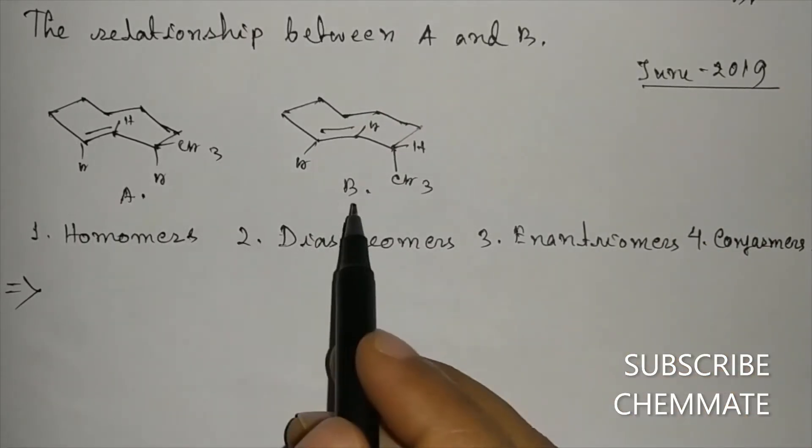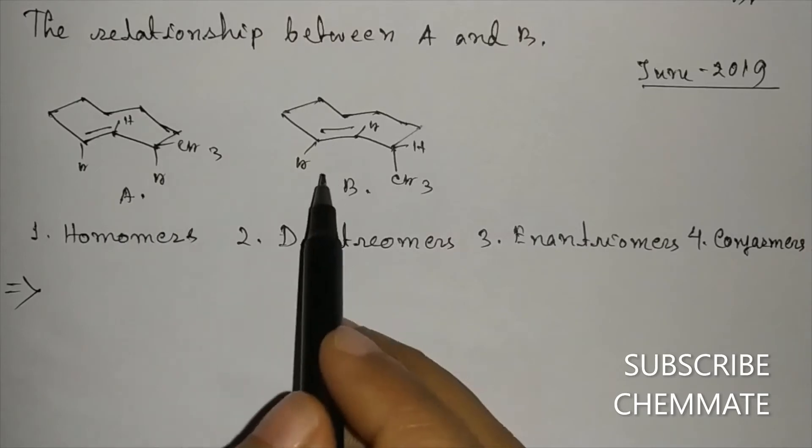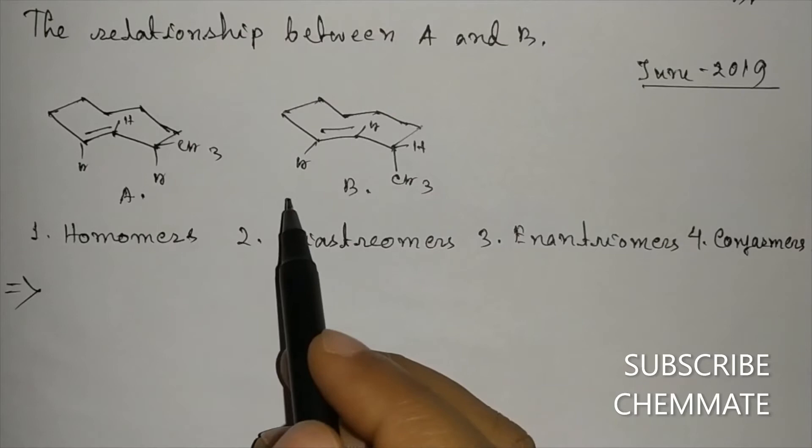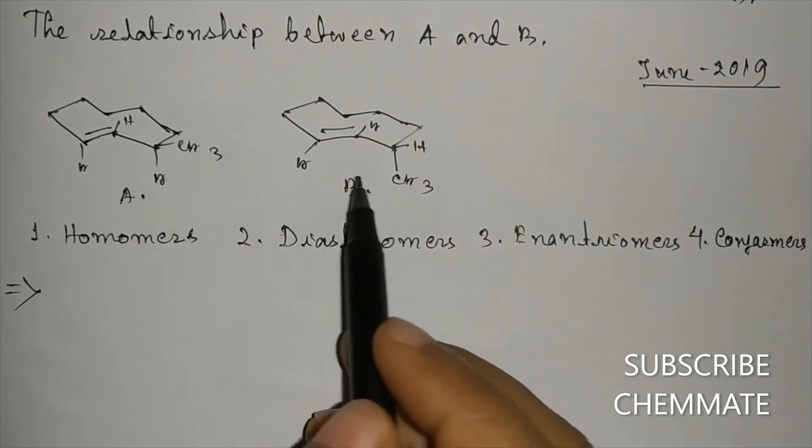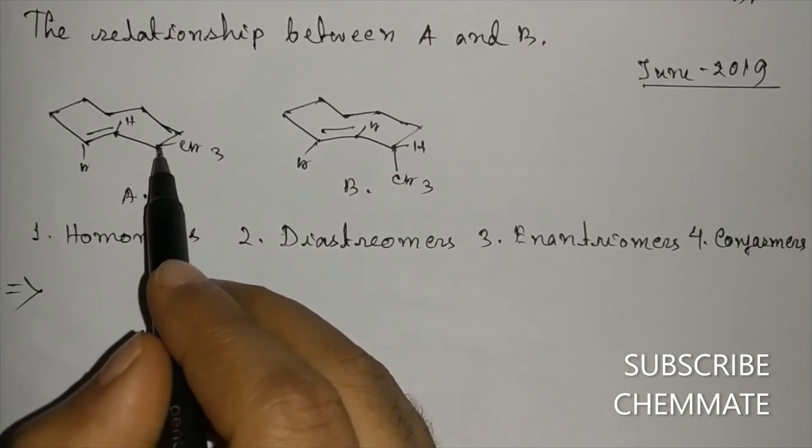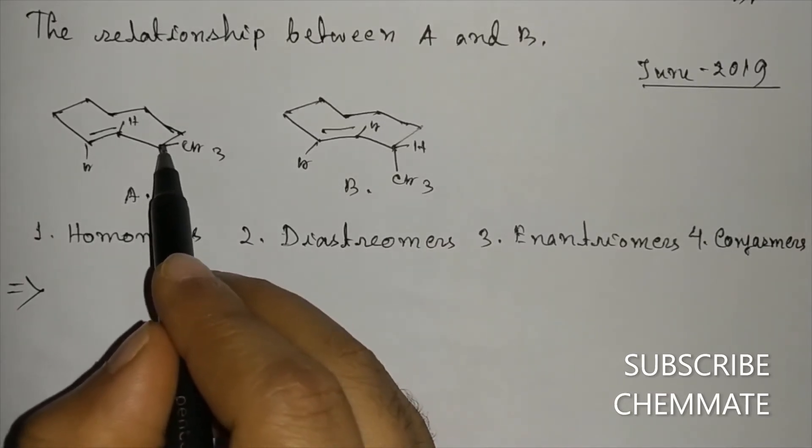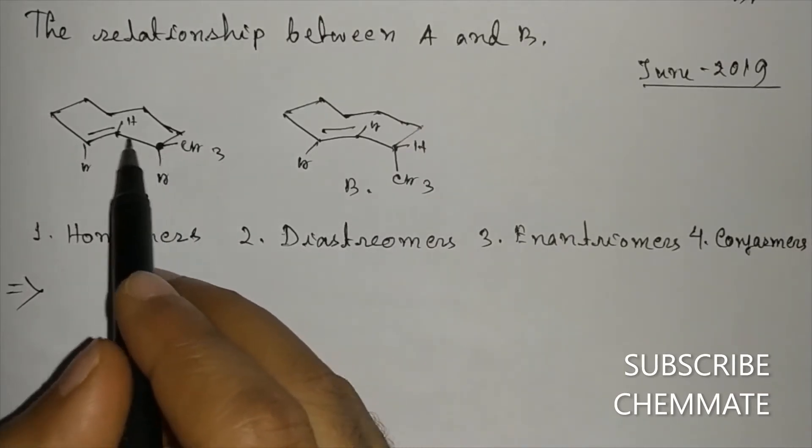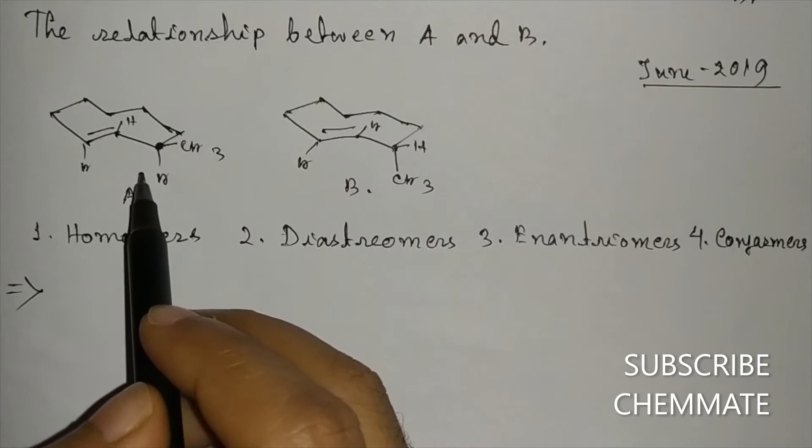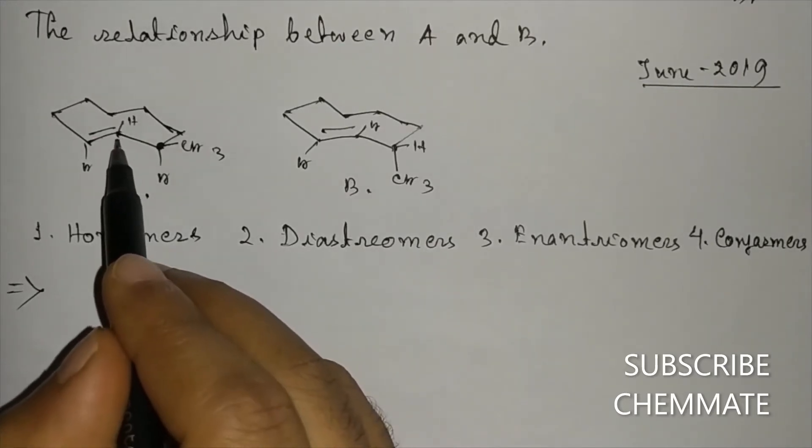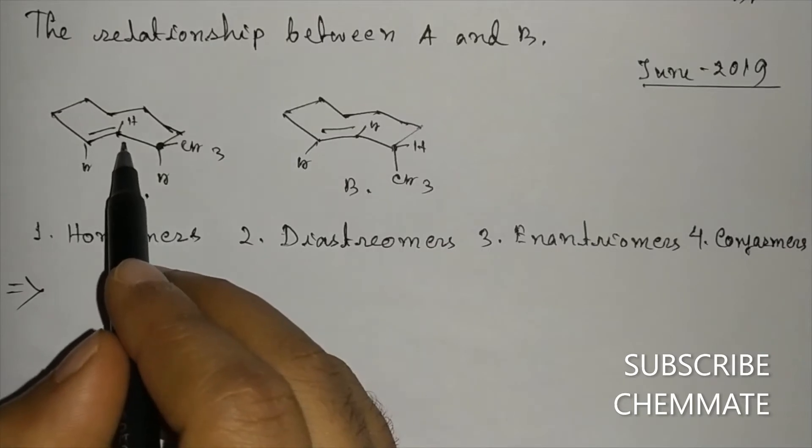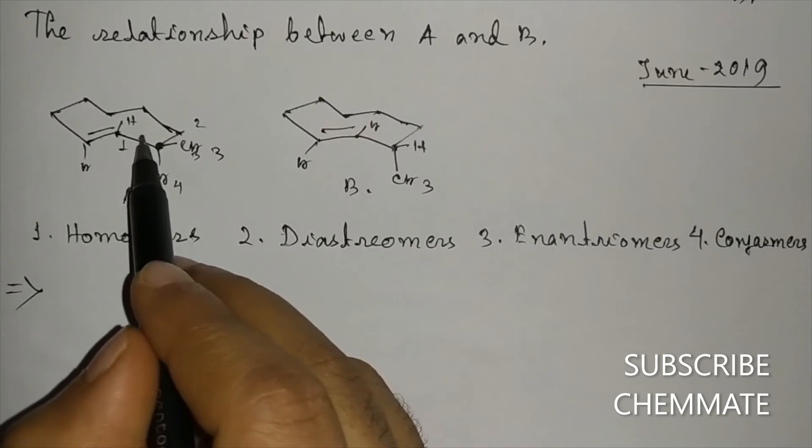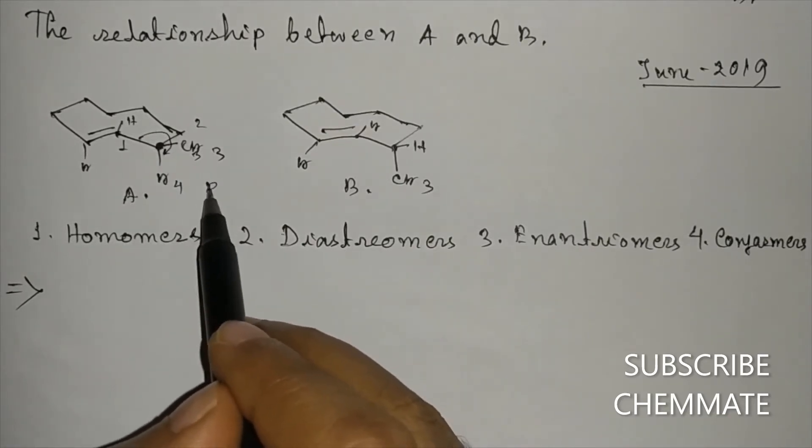As we can see, these two cannot be homomers because they cannot be identical. If we determine the configuration of this chiral carbon, the four groups attached have priority order 1, 2, 3, 4. So one, two, three - this is clockwise rotation, so it has R configuration.